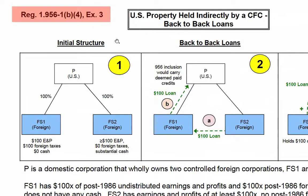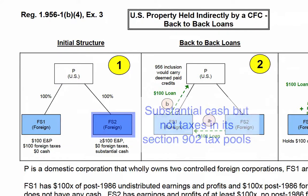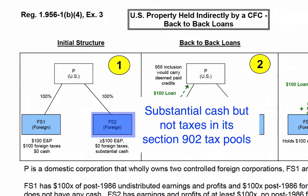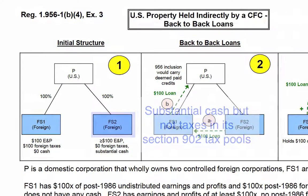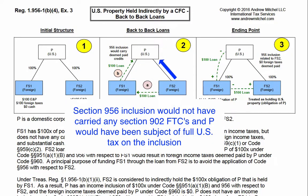In Example 3 of Regulation 1.956-1(b)(4), P was a domestic corporation that wholly owned two CFCs, FS1 and FS2. FS2 had substantial cash but had no taxes in its Section 902 tax pools. If FS2 were to loan cash directly to P, the Section 956 inclusion would not have carried any Section 902 foreign tax credits, and P would have been subject to full U.S. taxation on the inclusion.